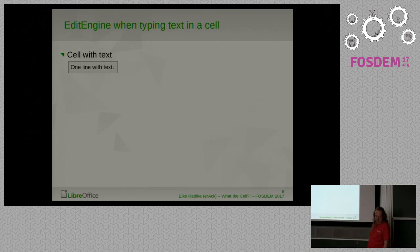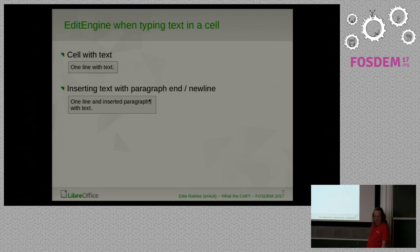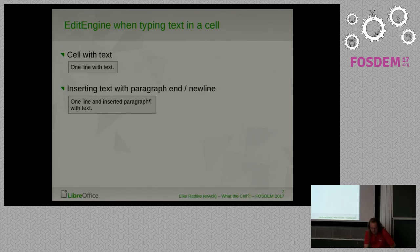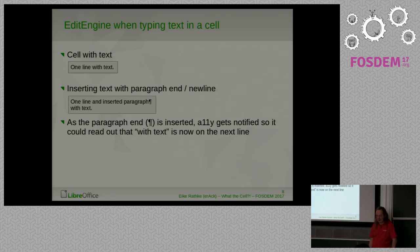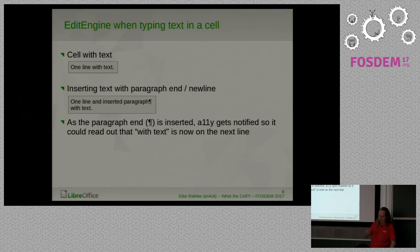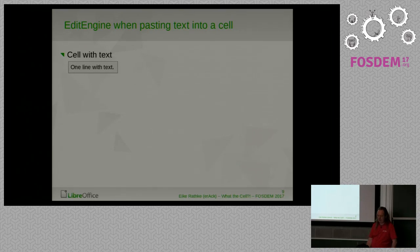On modern systems, the accessibility framework is enabled even if you don't have any screen reader in use, and it can get in the way at the most inconvenient occasions — and when it does, it's sometimes very hard to debug. For example, we have an edit engine with a cell containing one line of text. We start to edit and type some text. As soon as you reach the paragraph end and press Enter, accessibility is notified that there's a new paragraph, so it can read the new content.